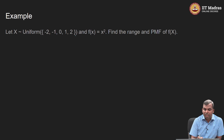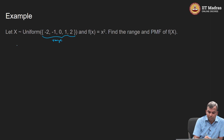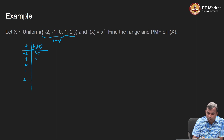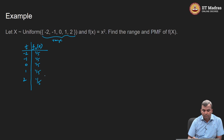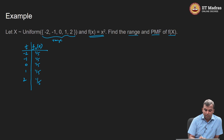Here is a situation where X is a uniform random variable on the set {-2, -1, 0, 1, 2}. The range of X is this set, and the PMF — writing it in a table with t and f_X(t) — for t = -2, -1, 0, 1, 2, each value has probability 1/5. So this is the random variable. Now, the function f I am looking at is f(x) = x squared, and I want to find the range and PMF of f(X), which is the new random variable.